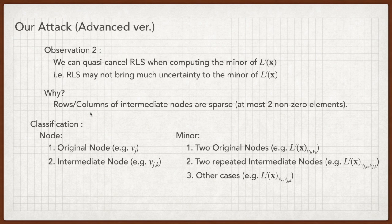And by choosing ADP carefully, we can completely kill the uncertainty of minors brought by the RLS. The reason is that the intermediate nodes only connect with at most two nodes. Thus, the rows or columns of them are sparse. This property is helpful to analyze the minors. Let's start our advanced version attack by classifying the nodes and the minors. We have two kinds of nodes: original nodes and intermediate nodes. We have three kinds of minors: minors associated with two original nodes, minors associated with two repeated intermediate nodes, and others.